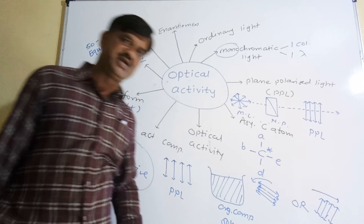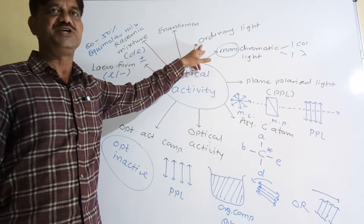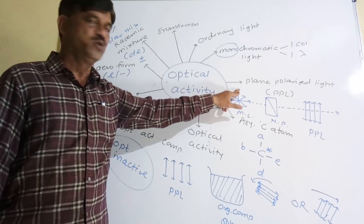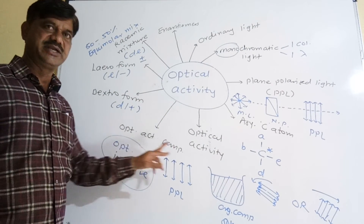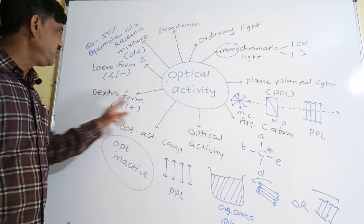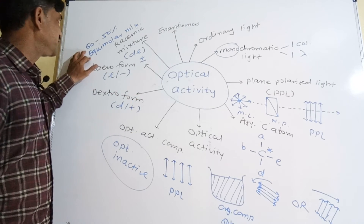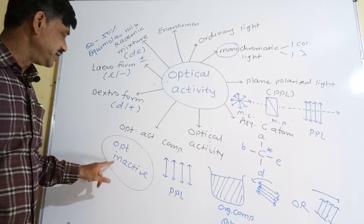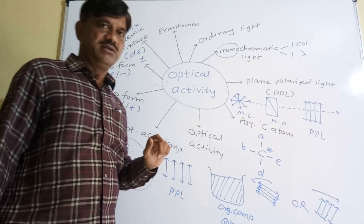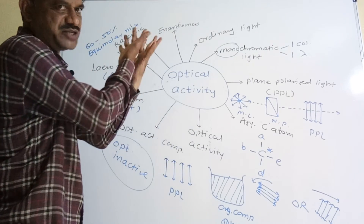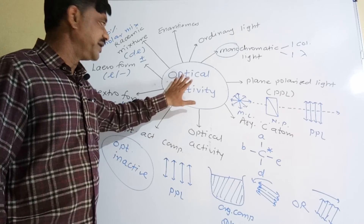We have covered all the definitions regarding VSA and SA type questions. To recap: ordinary light, monochromatic light, plane polarized light denoted by PPL, asymmetric carbon atom, optical activity, optically active compound, dextro form and leo form — dextro indicated by D or plus, leo by L or minus. Their equimolar mixture is the racemic mixture, which is optically inactive due to external compensation, denoted by DL or plus-minus form. When optical isomers show a non-superimposable mirror image relationship, such forms are called enantiomers. This is the content regarding optical activity.